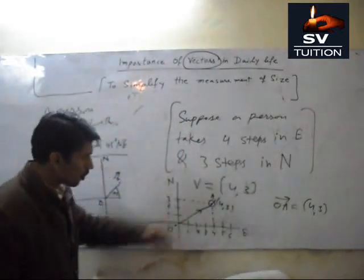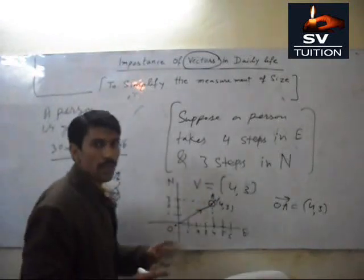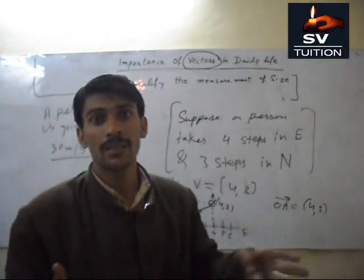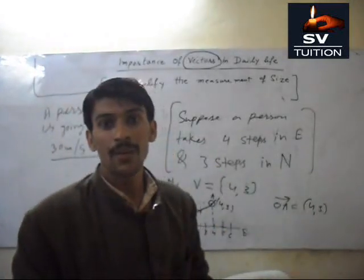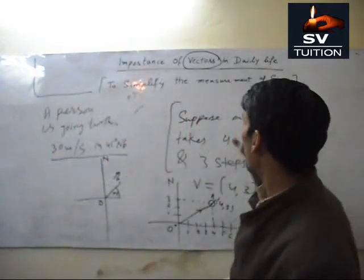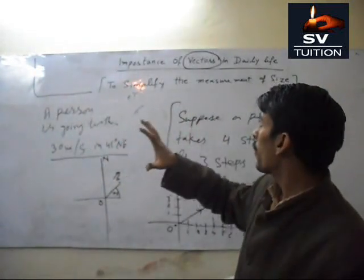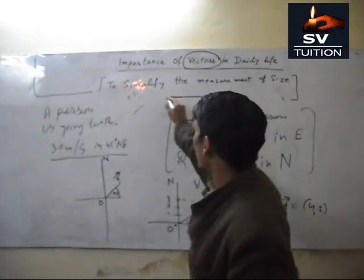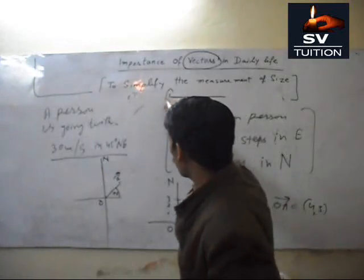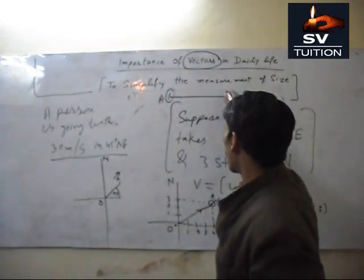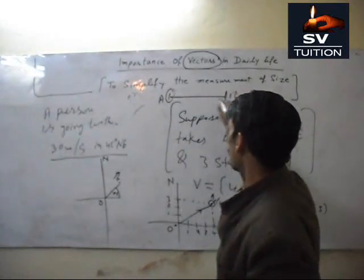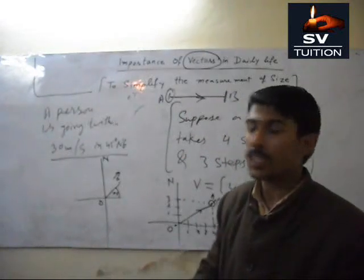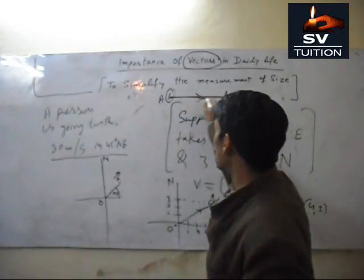Now this is difficult and also this is difficult. When we will show in vector form it will be very simple what we want to tell to others in our daily life. I think you will understand what is the importance. Vector is nothing, it is the line which has an initial point A and next point, that is endpoint or terminal point B.